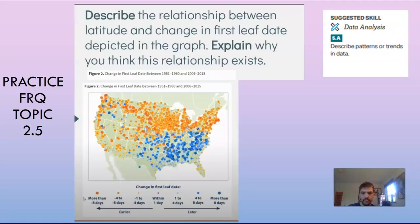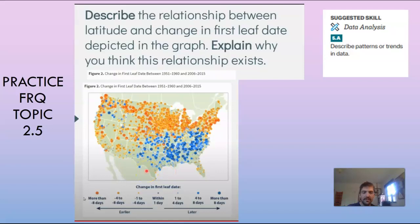For the end of this lesson, in your notes find the practice FRQ for Topic 2.5. Describe the relationship between latitude and change in the first leaf date depicted in the graph, and explain why you think this relationship exists. The change in first leaf date for honeysuckle trees is shown: dark orange means blooming eight days earlier; dark blue means eight days later. Look at the information and describe the relationship between latitude — or distance from the equator — and the change in first leaf date. Record that in your notes, and that is all for today. Thank you for tuning in — hope you have a beautiful day.